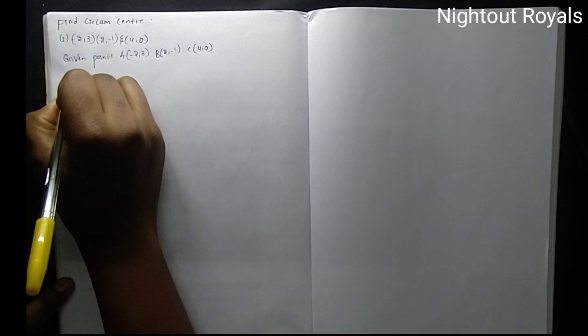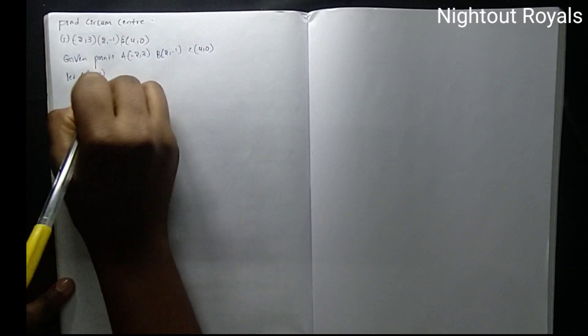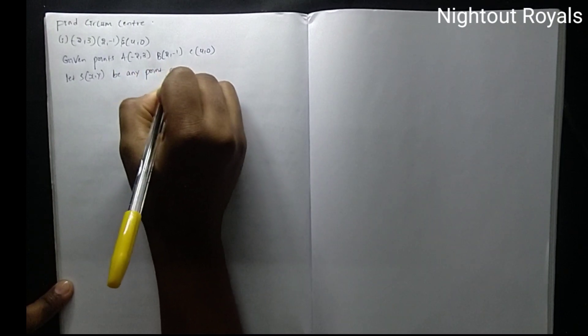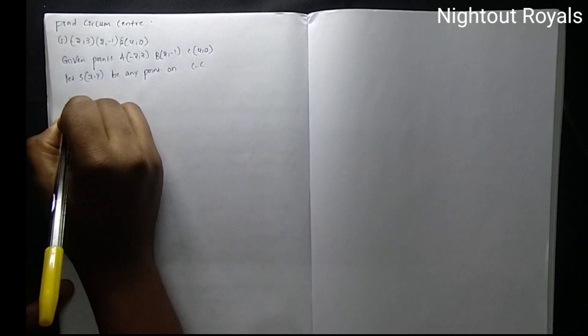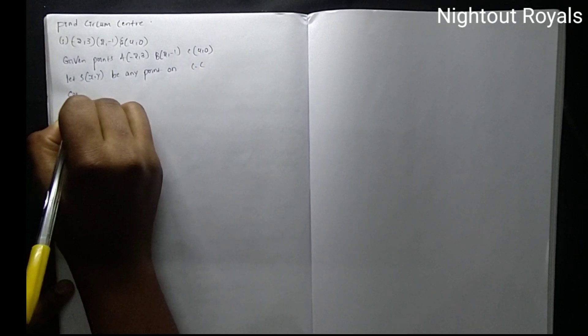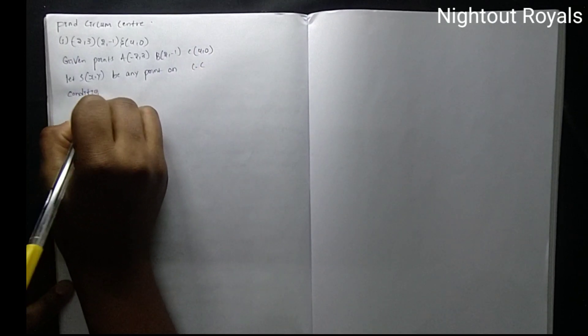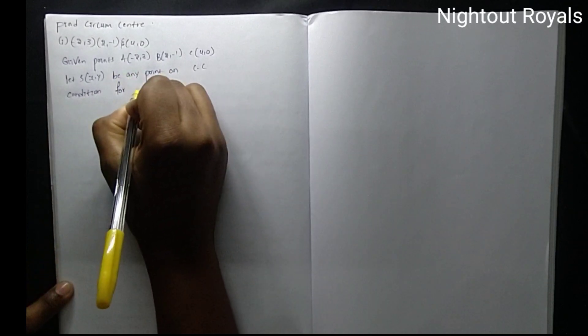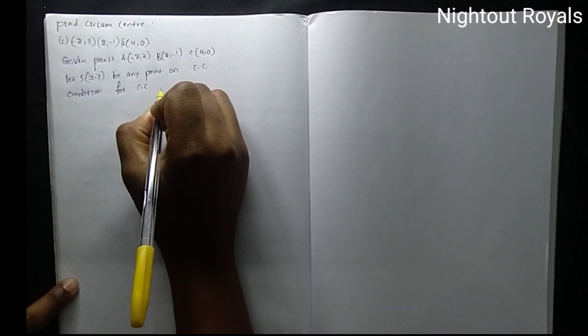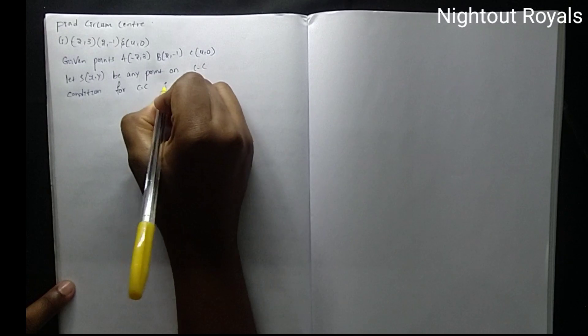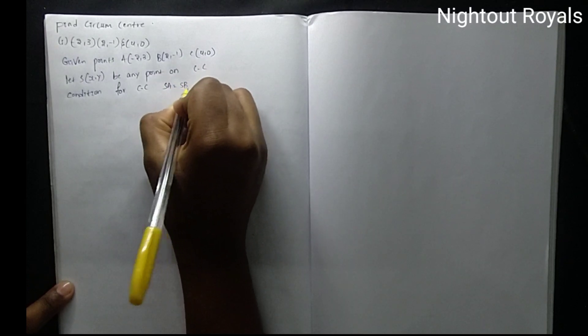Next, the question asks us to find S(X, Y), any point on the circumcenter. What is the condition for circumcenter? The condition is SA equal to SB equal to SC.